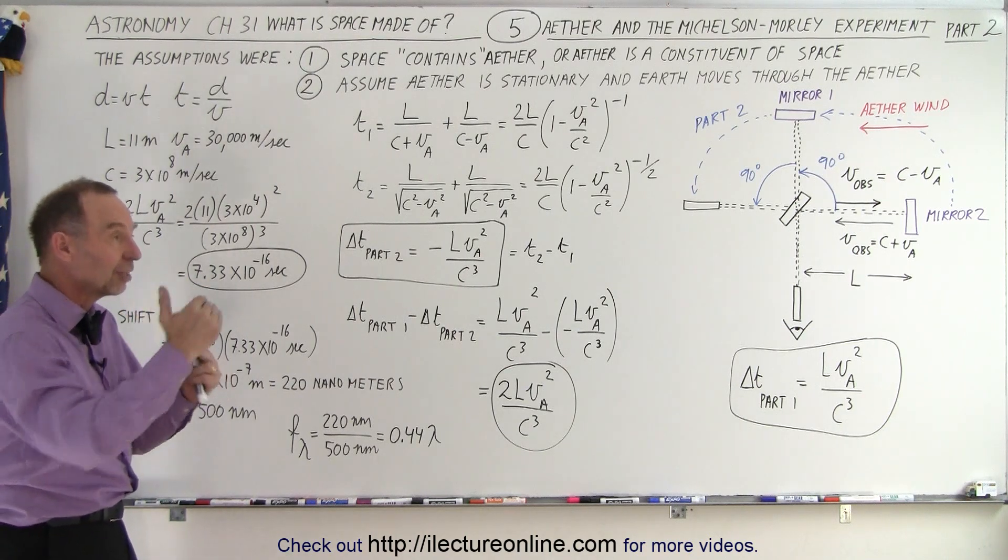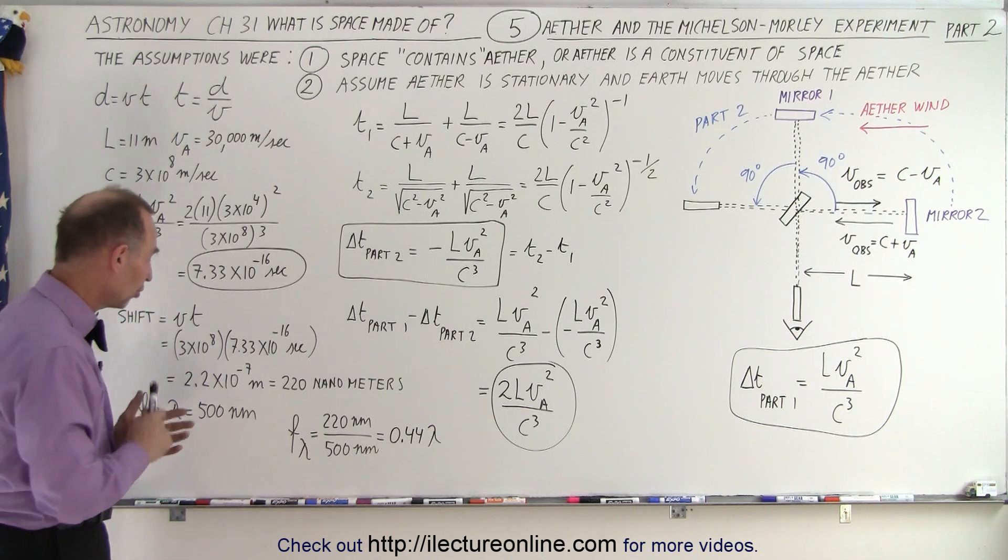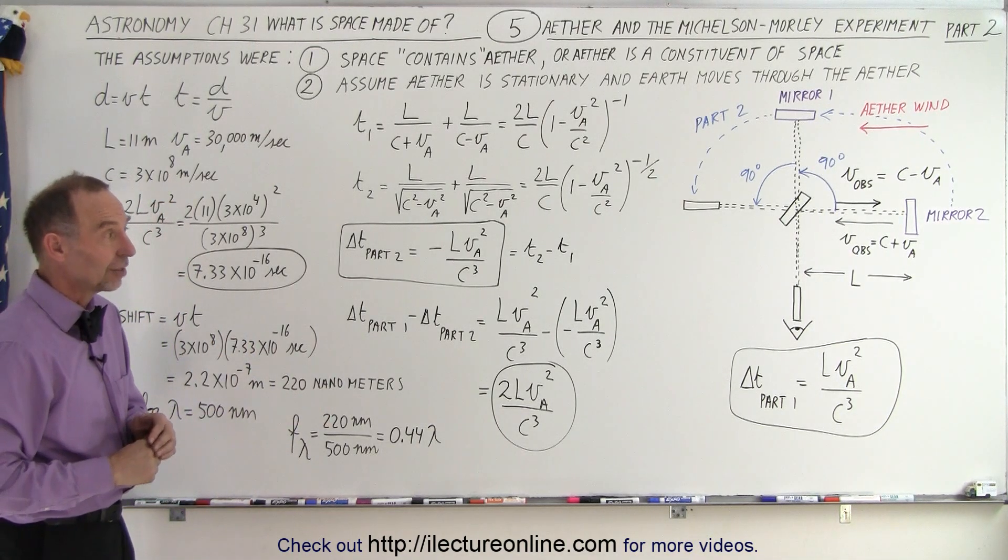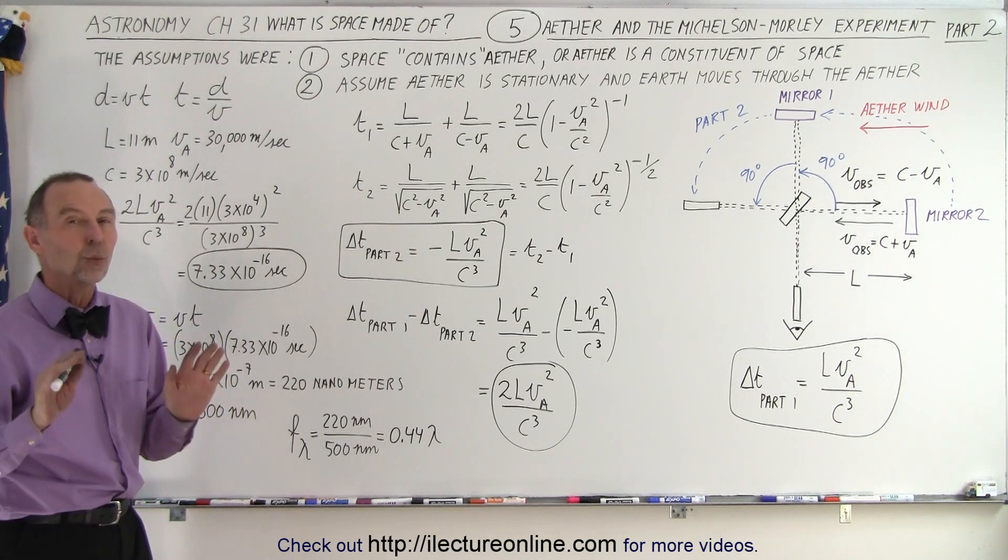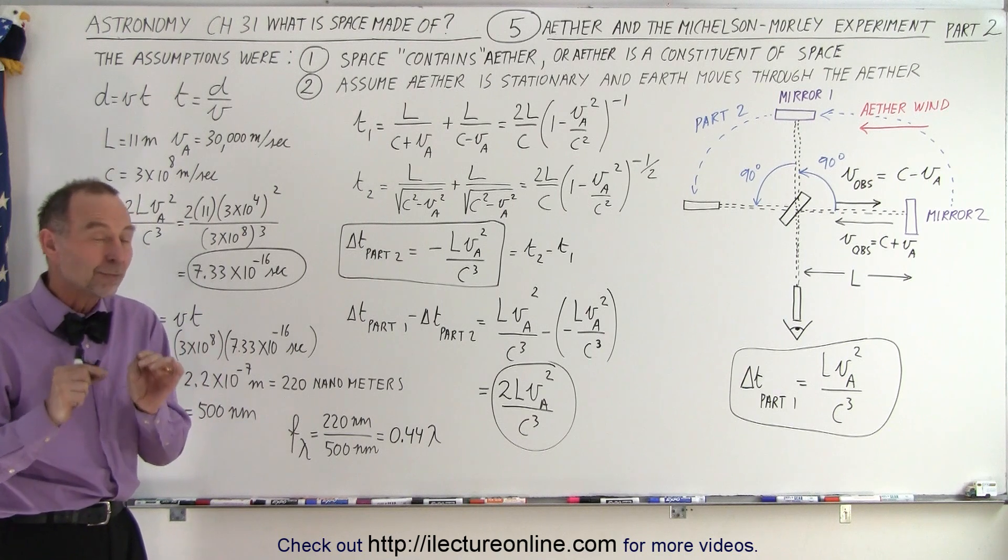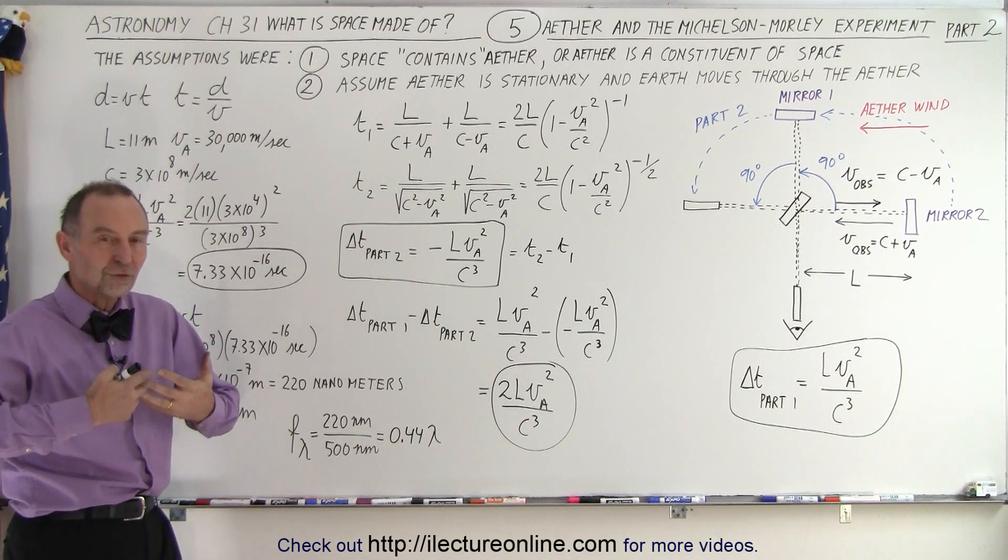So there was no question that if the ether was real and we actually could see the difference in the speed of light because of the relative velocity of the speed of light and the velocity of the ether, and of course the direction of those velocities, we should have been able to see that shift on the interferometer. It turns out no shift was seen whatsoever.